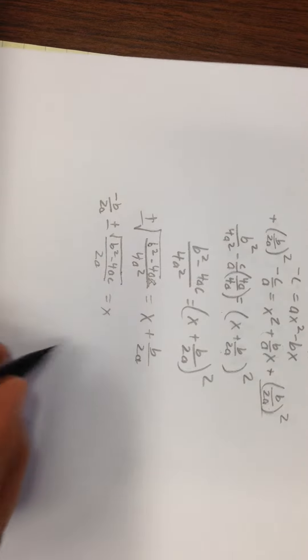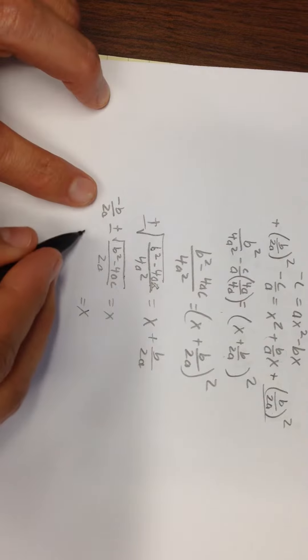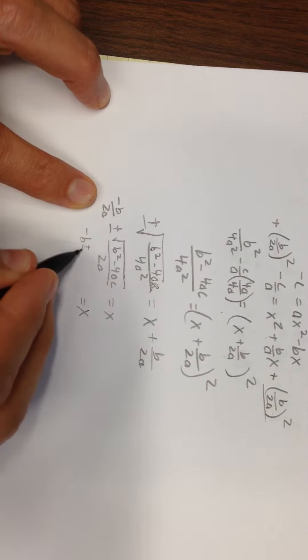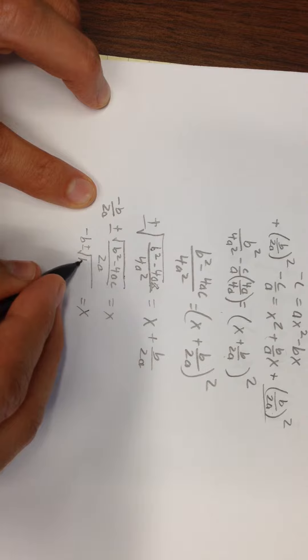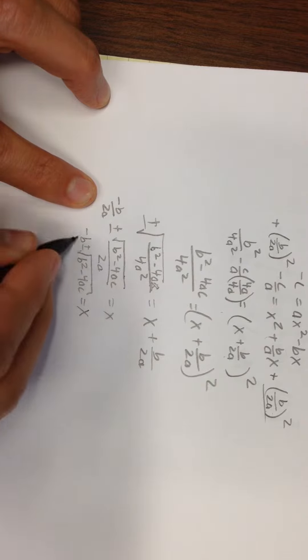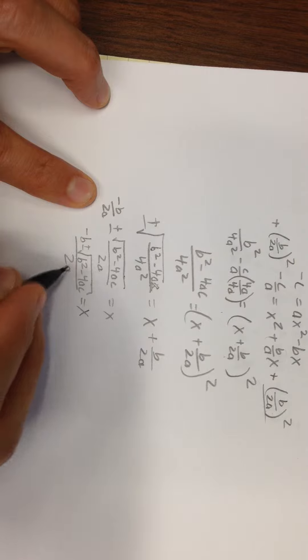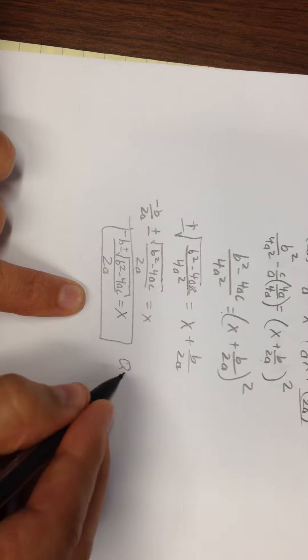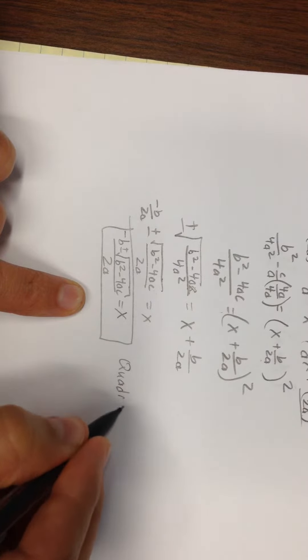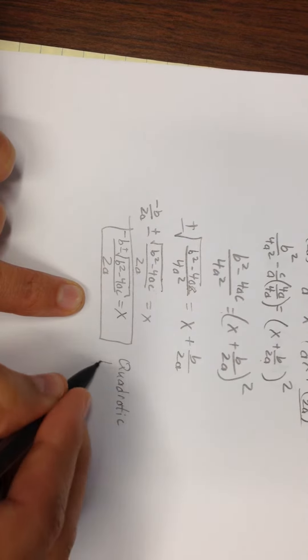equals x. So that simplifies to x = (-b ± √(b² - 4ac))/2a. That formula in the box is commonly known as the quadratic formula.